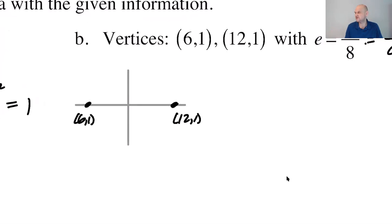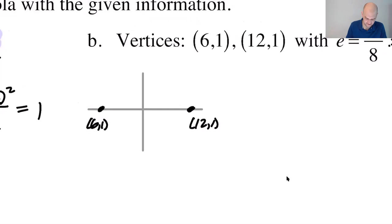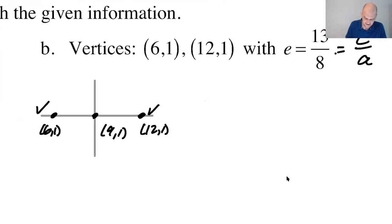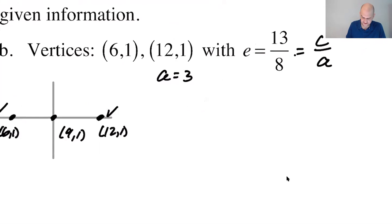All right. So you're a vertex, you're a vertex. So the center we know is at (9,1). And therefore we know that A is 3 because you can go 3 this way, or you could go 3 this way. All right. So if we know that A is 3, we know that C over 3 is 13 over 8.